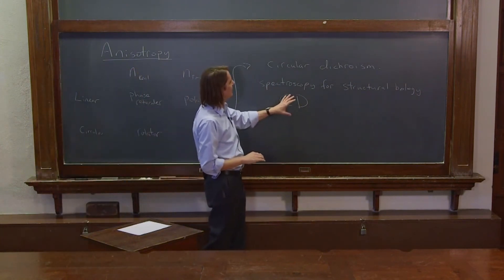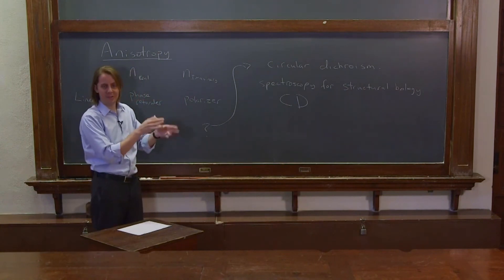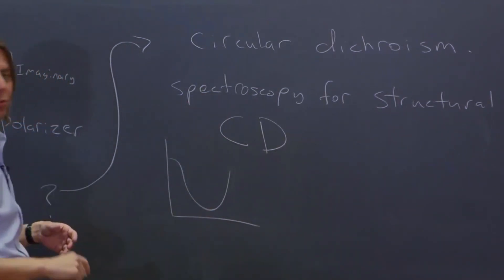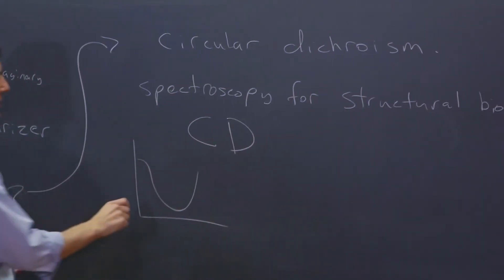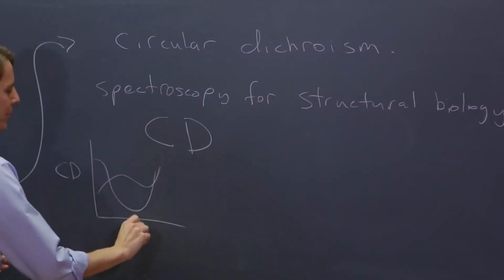What the CD tells you is different kinds of protein structures. You have a protein with a lot of alpha helices in it, it gives a certain spectral circular dichroism. And if you have one with a lot of beta sheets in it, it gives a different shape to the circular dichroism.